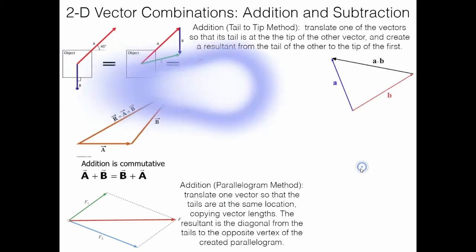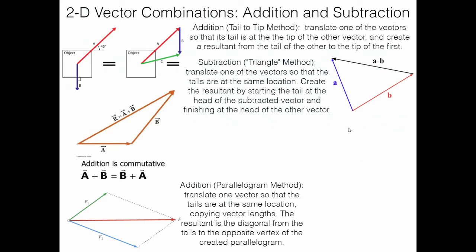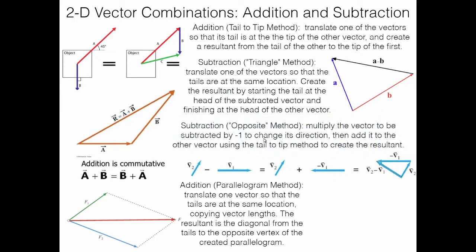Now for subtraction. The first method is called the triangle method. Translate one vector so both tails are at the same location — similar to the parallelogram method. To find A minus B, place the tail of the resultant at the head of the subtracted vector B, and finish the resultant at the head of the first vector A. This always creates a triangle. So you take A and move its tail to start at the tip of the vector you're subtracting.